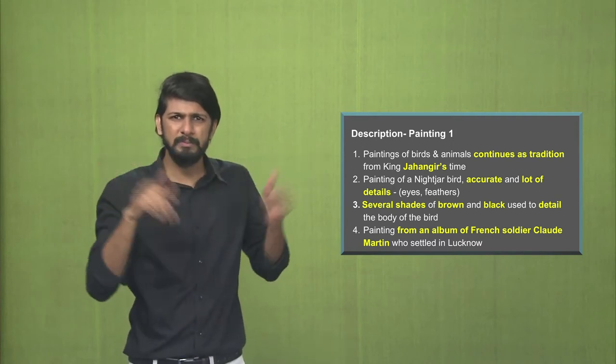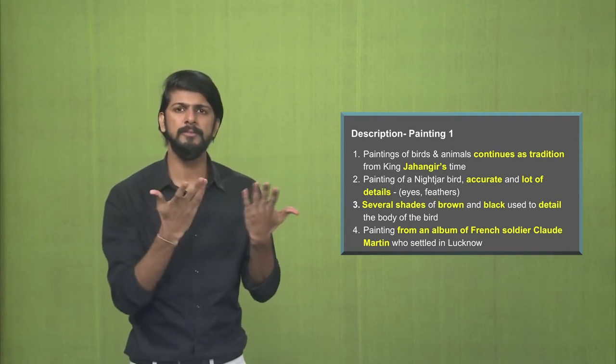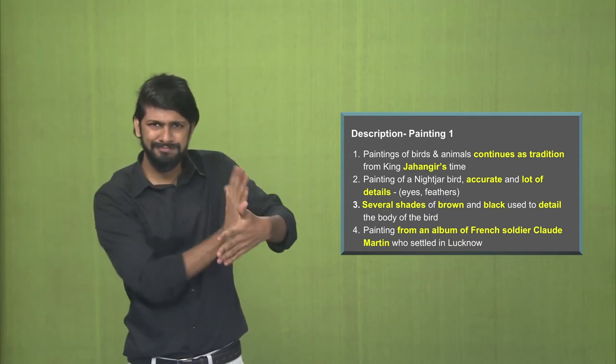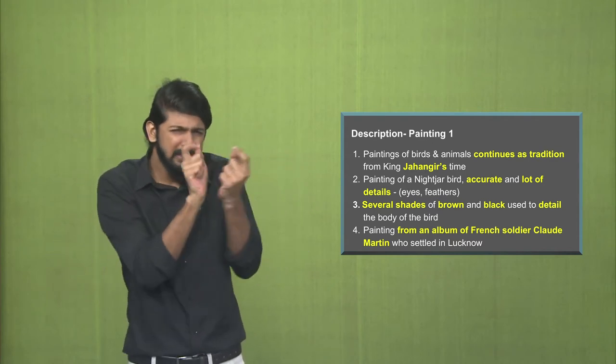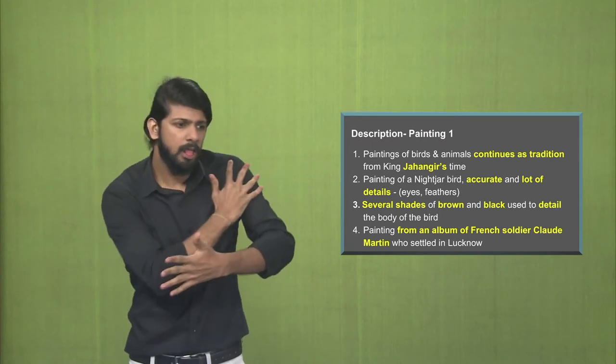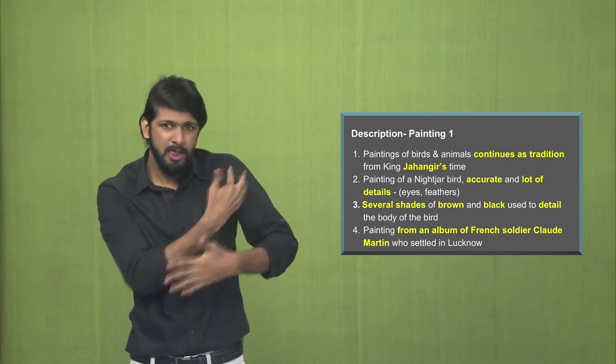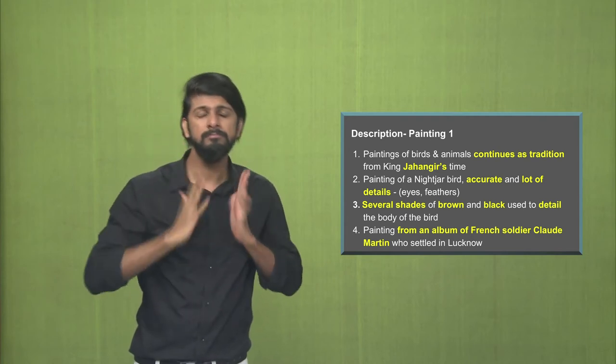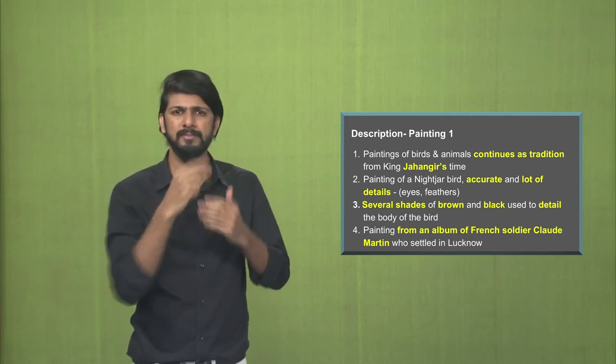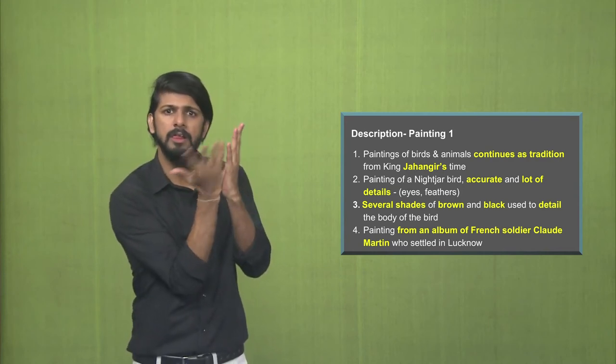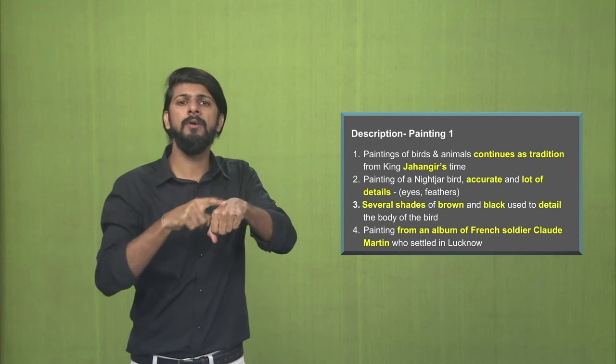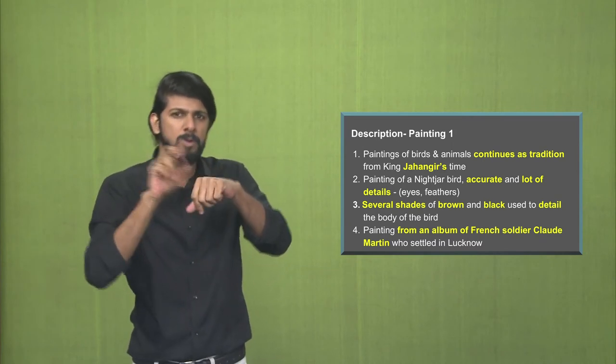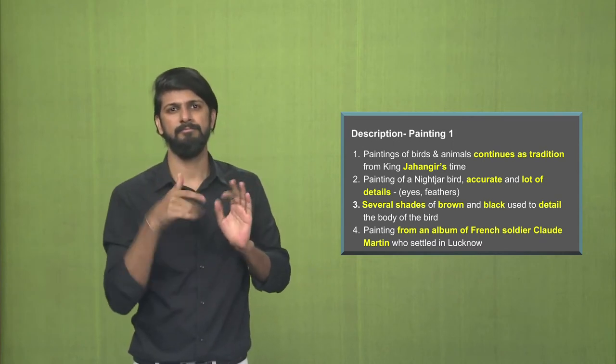The painting of a night jar bird is very accurate and a lot of detailing has been done. You would see the feathers, the body of the bird has been precisely matched as the real specimen. Very accurate detailing of the eyes, of the neck area. Lot of shades have been used here primarily of two colours which is brown and black. You will see the body of the bird, the detailing has been done in the shades of brown and black.